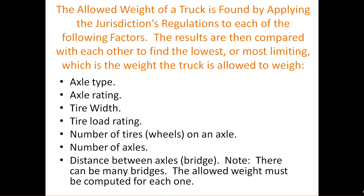The allowed weight of a truck is found by applying the jurisdiction's regulations to each of the following factors. The results are then compared with each other to find the lowest, or most limiting, which is the weight the truck is allowed to weigh: axle type, axle rating, tire width, tire load rating, the number of tires or wheels on an axle, the number of axles, and the distance between the axles (also called the bridge). Please note, there can be many, many bridges within a truck, and the allowed weight must be computed for each one.